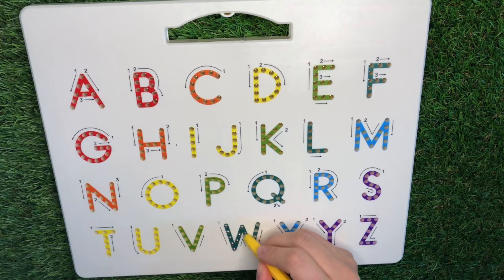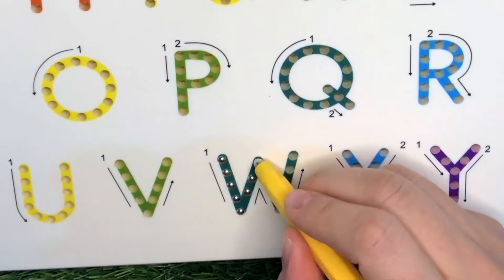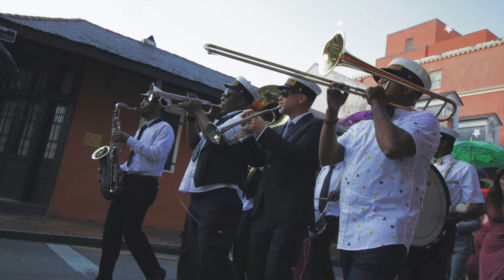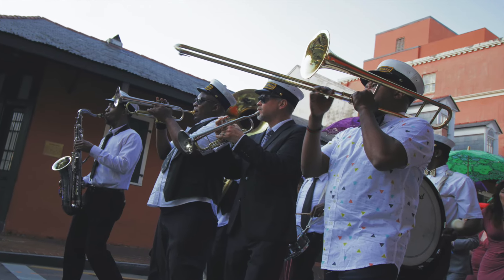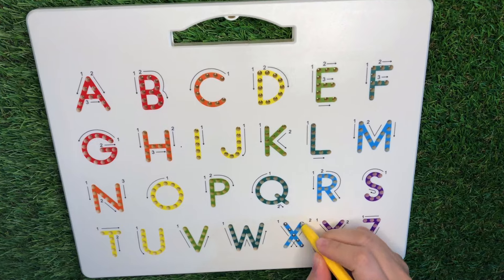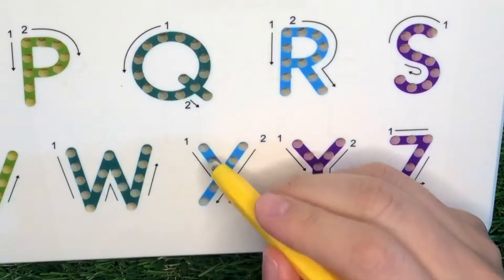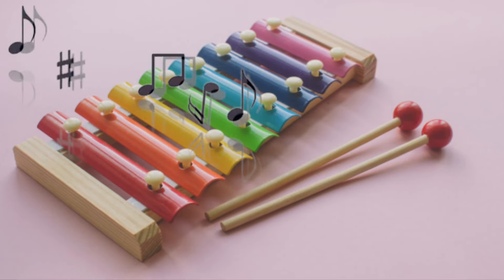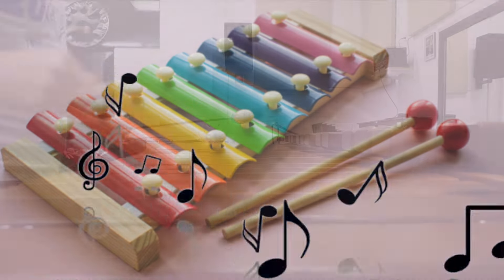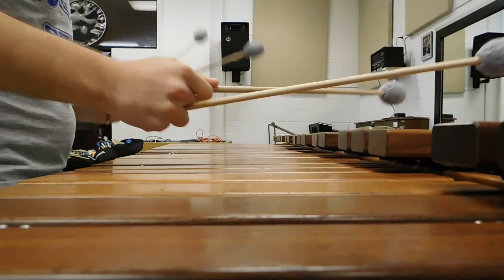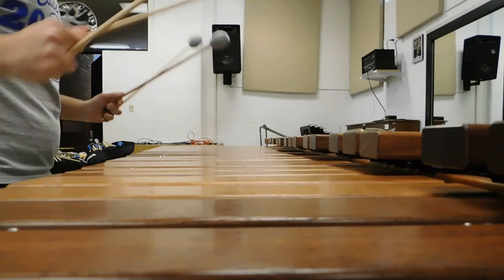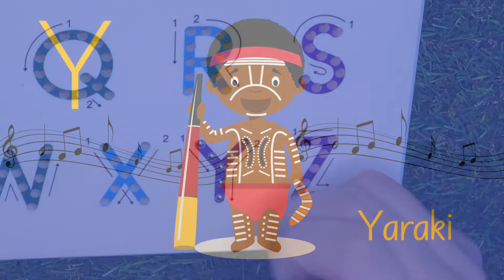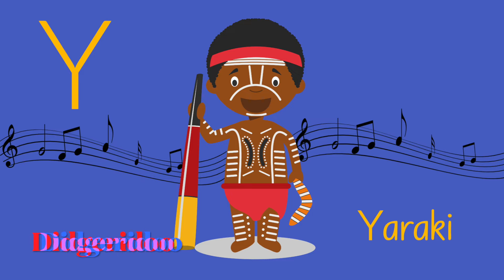W is for... Wind Instrument. X is for... Xylophone. Y is for... Yidaki, also known as Didgeridoo.